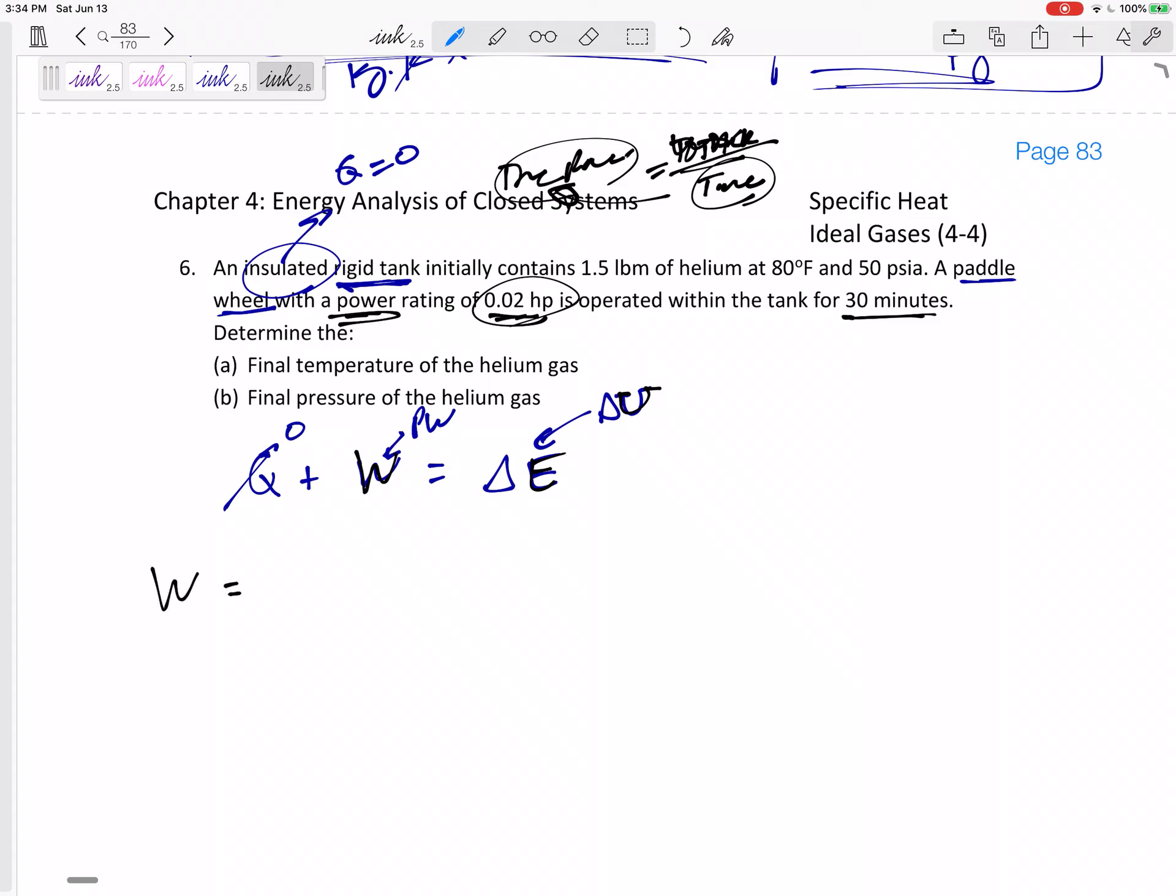So here on the left-hand side, I've got the work due to the paddle wheel, and on the right-hand side, I've got delta capital U, which I'll say is M delta lower U, which I'm going to say is, because we are, sometimes it'll say use constant specific heats. I'm just going to do this since we're in this section. I'm going to use C, should I use Cp delta T or Cv delta T? It doesn't matter what it says up here. It just matters what we're looking for. We're looking for a delta U, so we need Cv delta T.